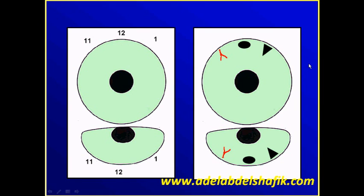The gonioscopes give us a reverse image. If you put the mirror down at the 6 o'clock, you are seeing things up at the 12 o'clock. But it's not like the indirect ophthalmoscope lens where everything is reversed — up is down and right is left. Here, we only put the lens down to see up, but things are not laterally reversed. The 11 o'clock is on this side, and the 1 o'clock is on the other side — it's not reversed like the indirect ophthalmoscope.